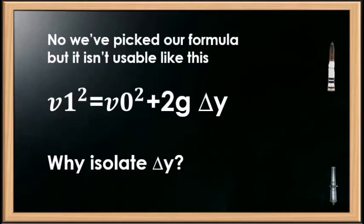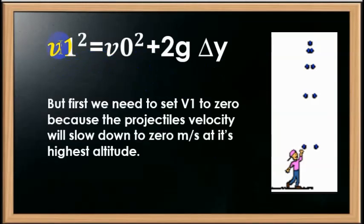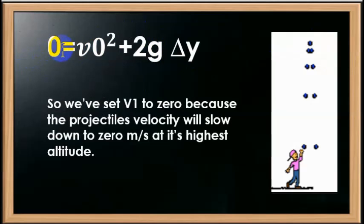We need to find delta Y, which is the change in height on the Y-axis — zero represents the initial point. We use Y because it represents height above the surface on the Y-axis. First, we set our final velocity to zero, because at the highest point the speed will be zero — the velocity will be zero. That's the point where the cannonball can no longer fight gravity and starts to fall back.